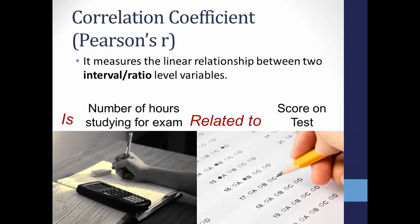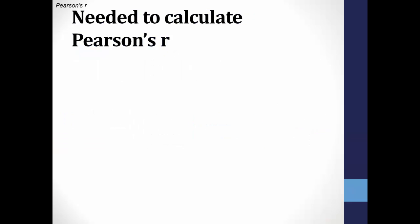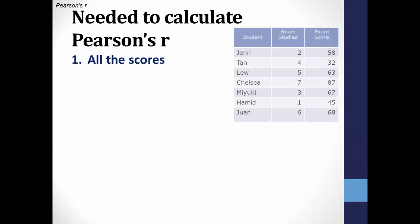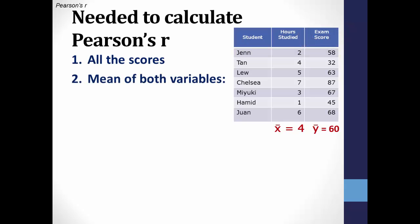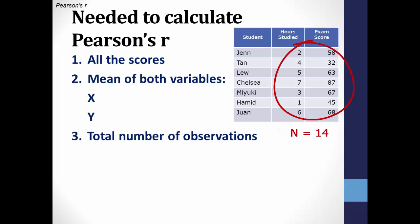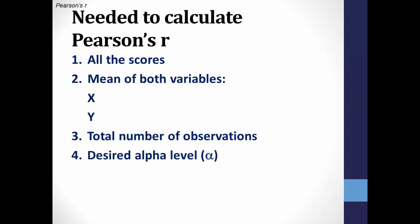They could be gathering interval or ratio level data. For the information to plug into the formula, you need to have all the scores in the dataset — two sets of scores for each case. With this, you can calculate the mean of both continuous level variables, x and y. You'll also need the total number of observations so you can calculate degrees of freedom, and you will need to establish your alpha level, which is usually .05.